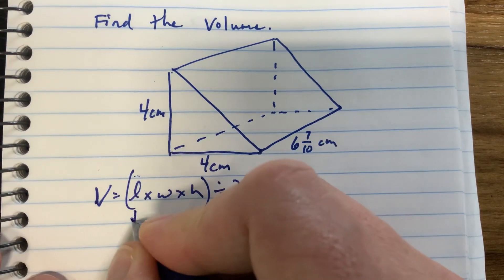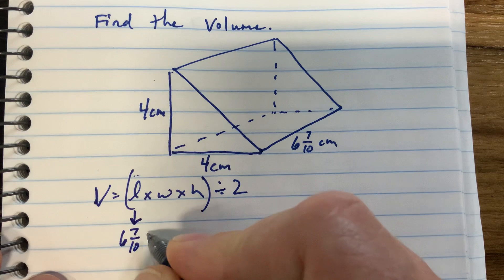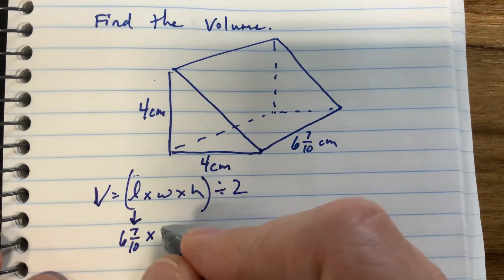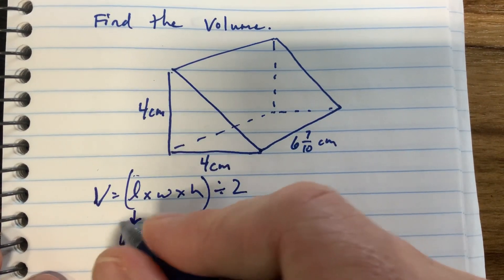Now we have some numbers here. Six and seven tenths is the length, the width is going to be four centimeters, and the height is going to be four centimeters.